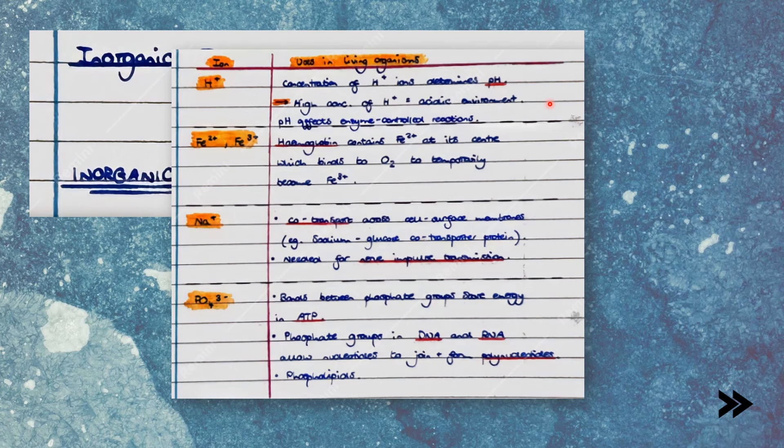Next, we have Fe2+ and Fe3+ ions. Hemoglobin in red blood cells contains Fe2+ at its center, which binds to oxygen to temporarily become Fe3+. This is important in transporting oxygen around the body in the bloodstream.